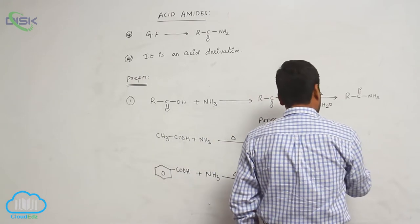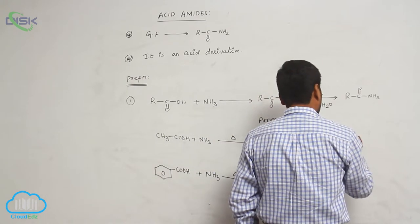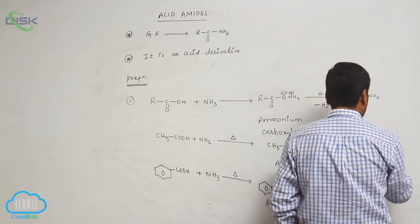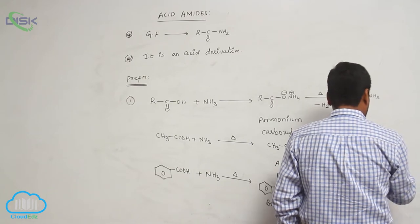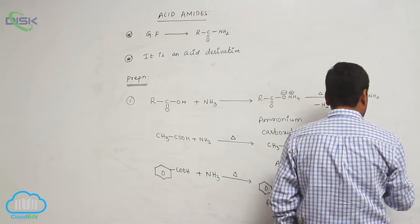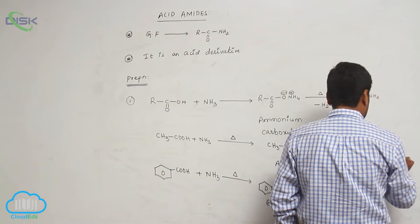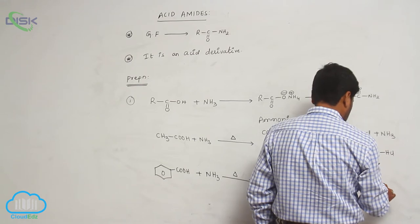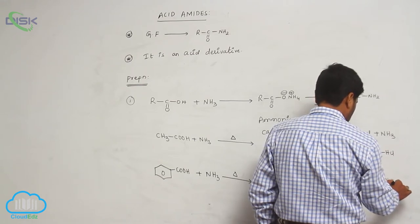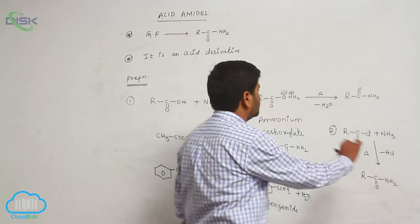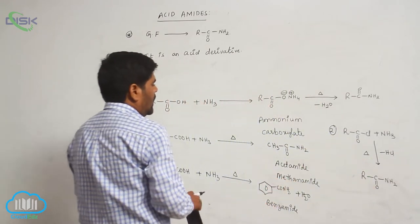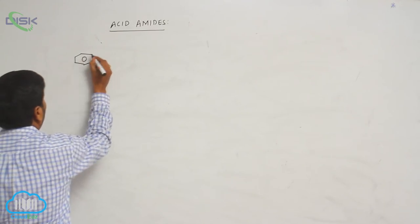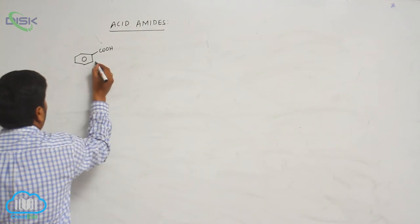Second method: an acid chloride reacts with ammonia. Loss of hydrochloric acid takes place to form an acid amide.